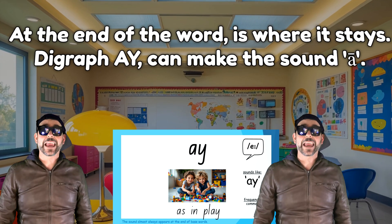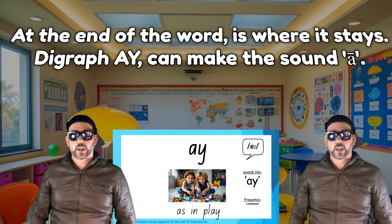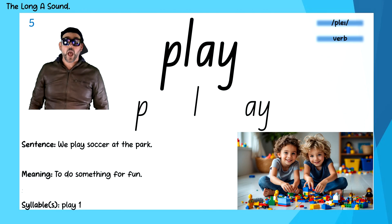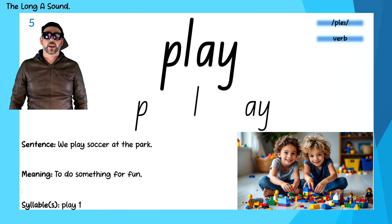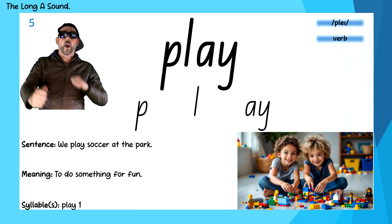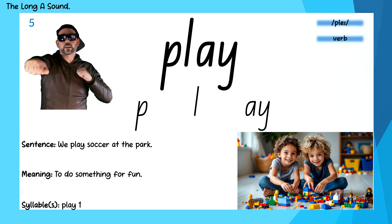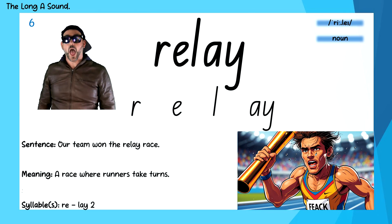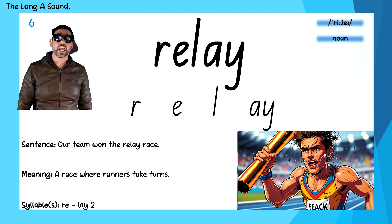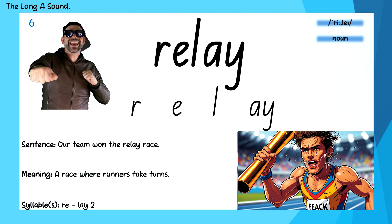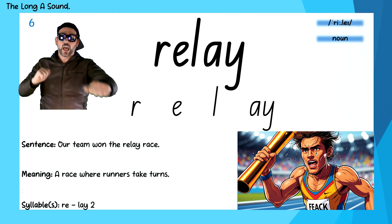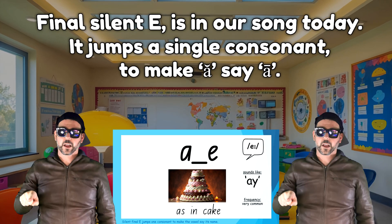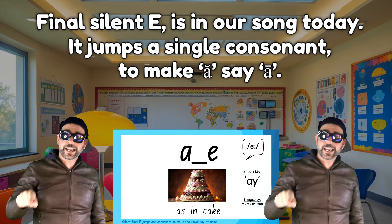Digraph AY can make the sound A. Play — P-L-A-Y. Relay — R-E-L-A-Y. Final silent E is in our song today.